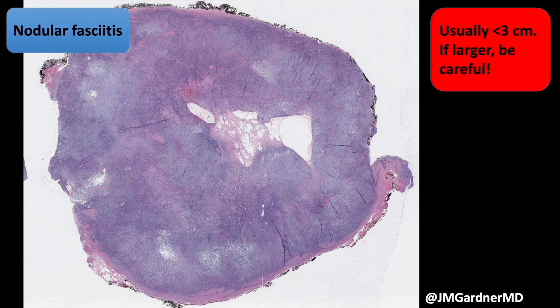Nodular fasciitis — an oldie but a goodie, and one you can never see or talk about enough because it can be scary sometimes. One thing to keep yourself out of trouble is size: nodular fasciitis usually is less than three centimeters. It could be three and a half or four centimeters, but not ten centimeters. Other things in the fasciitis family — like ischemic fasciitis and myositis ossificans — can get quite large, but nodular fasciitis should be small. If it's bigger than three centimeters, really think twice about the diagnosis.